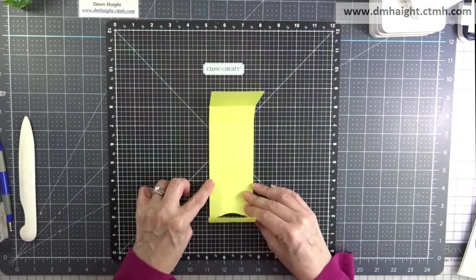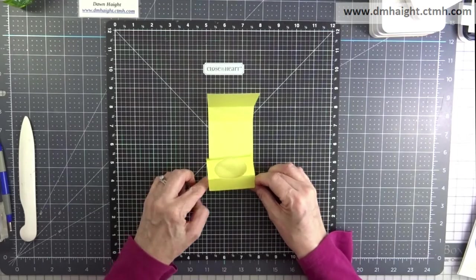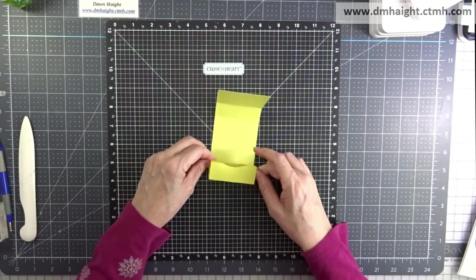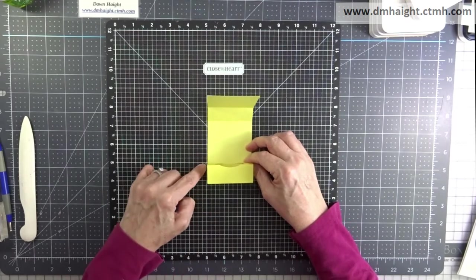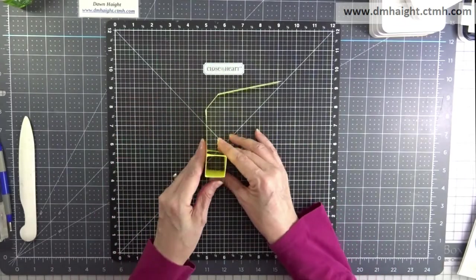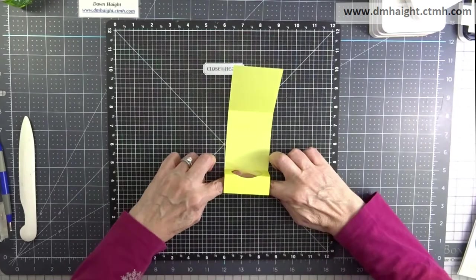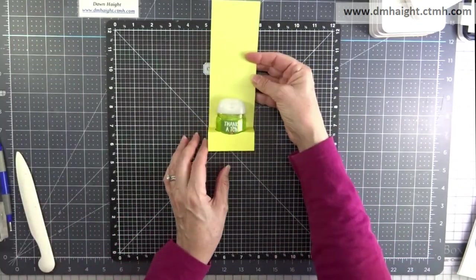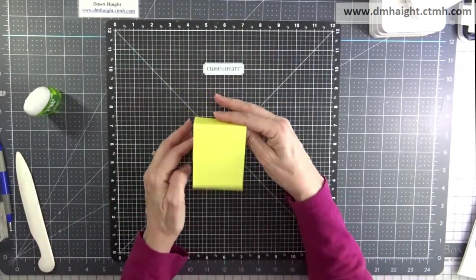I'm using the markings on my Versa mat to square everything up. It's going to be a one inch square box. If you place the back of the sticky score tape towards the back of your box at the one inch line, it will be straight and you'll get a one inch square that will fit your hand sanitizer.